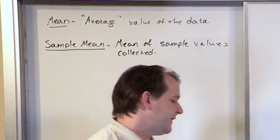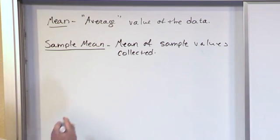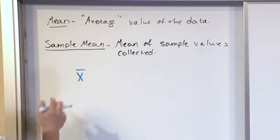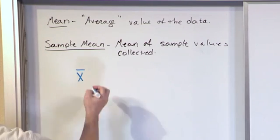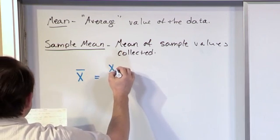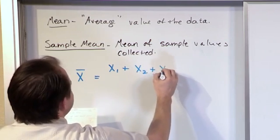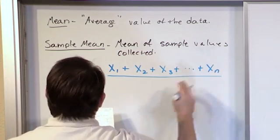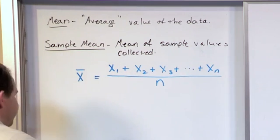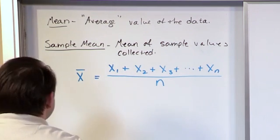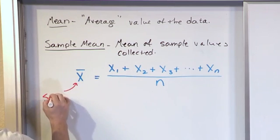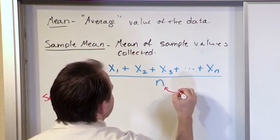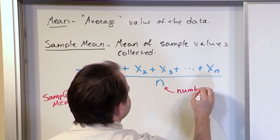The way we write that down in math is typically X with a bar on top — X-bar. The bar means we're taking the average value of all of our little data values X. It is exactly how you know how to calculate the average: value 1 plus value 2 plus value 3, and so on, plus the nth value — however many values you've collected in your survey — and you divide by n, the number of samples. We call this the sample mean.